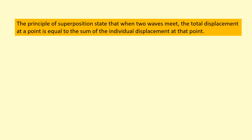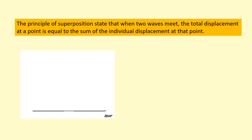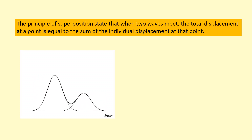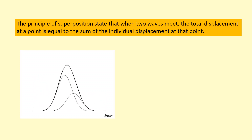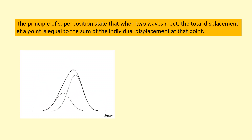The principle of superposition states that when two waves meet, the total displacement at a point is equal to the sum of the individual displacements at that point. For example, these two waves have positive displacements — they're actually pulses. When they meet, they add up: the positive and positive displacements combine to give an even bigger displacement.